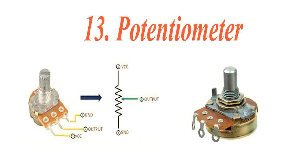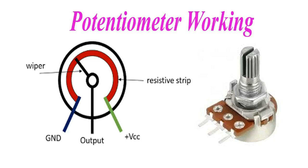The position of the wiper determines how much of the voltage is passed through, providing a variable output. An input voltage is applied across the two fixed end terminals.